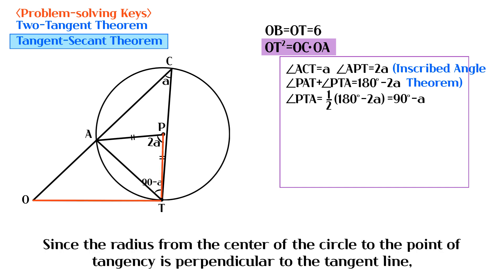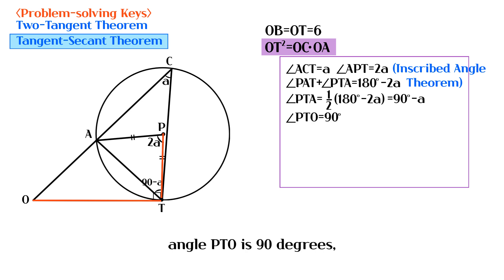Since the radius from the center of the circle to the point of tangency is perpendicular to the tangent line, angle PTO is 90 degrees. And angle ATO is A.